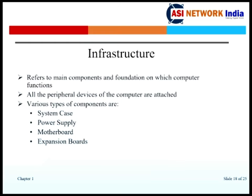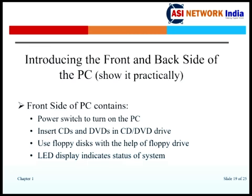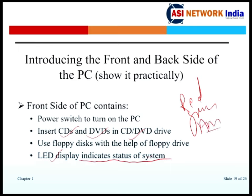Infrastructure peripherals include the system case, power supply, motherboard, and expansion ports. Looking at the front and back side of the PC: the CD/DVD drive is visible at the front, along with an LED display that indicates system performance — green indicates normal operation, while red or amber indicates the system is not running well.